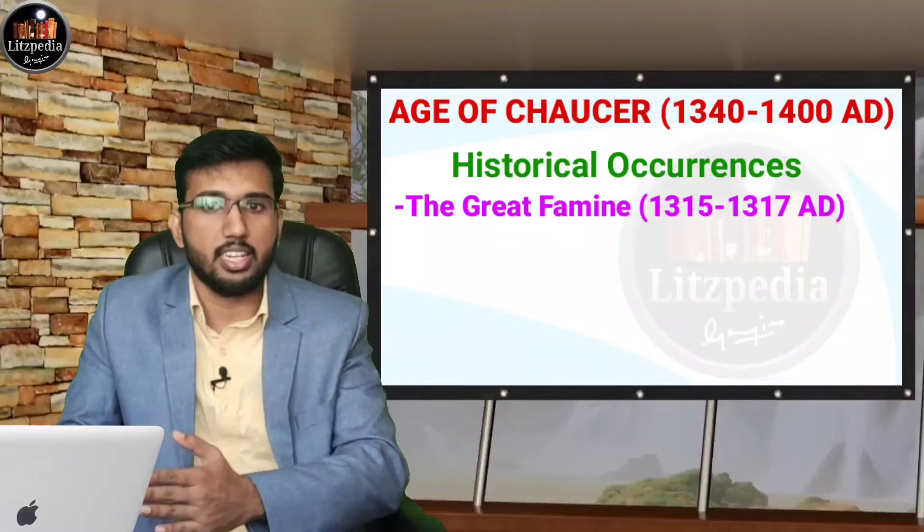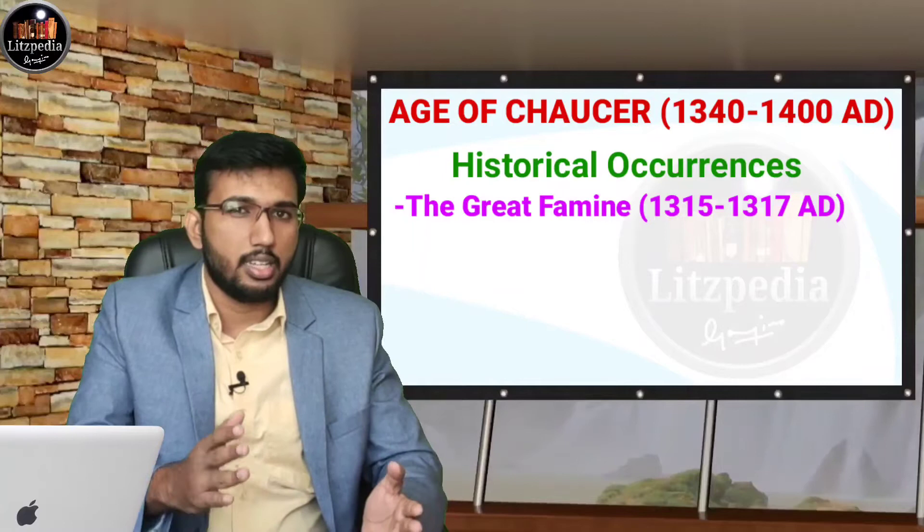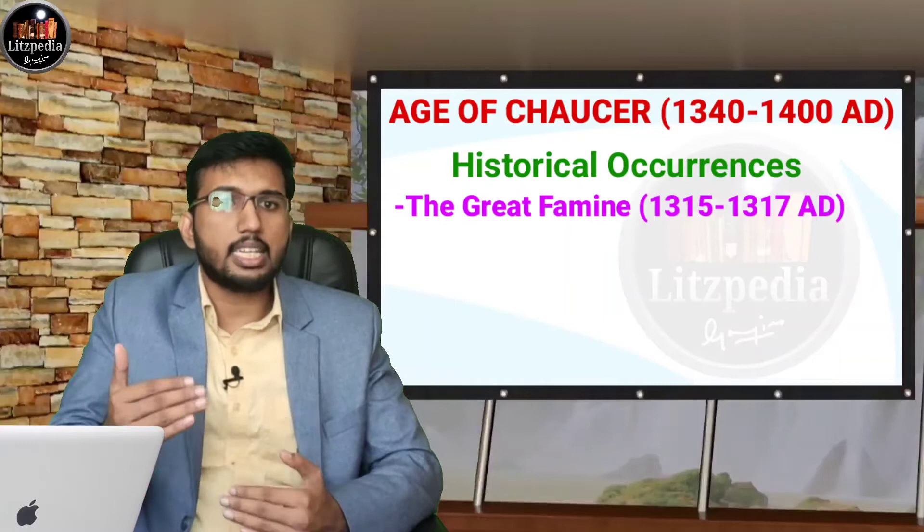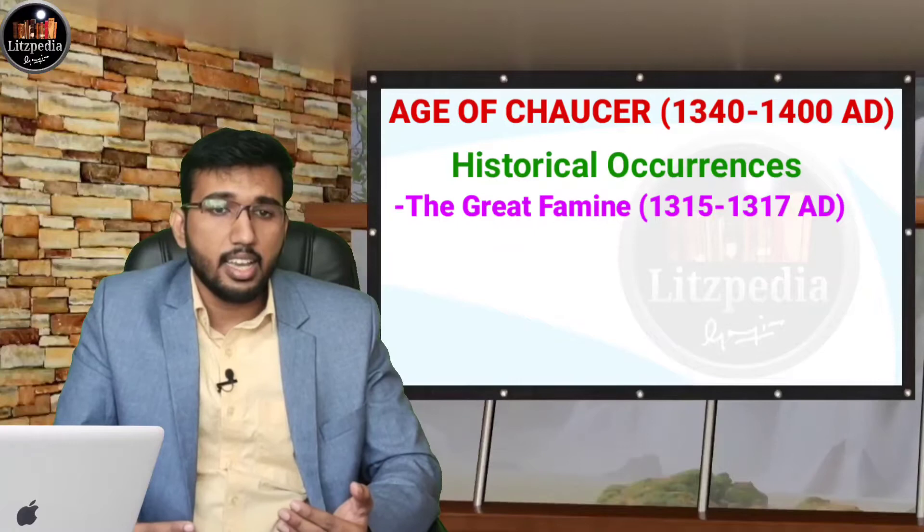There was a shortage of food items due to climate change — excessive rain occurred — and around 15% of persons died during that time. These historical occurrences are interconnected: the Great Famine was followed by the Black Death, and then the Peasants' Revolt.